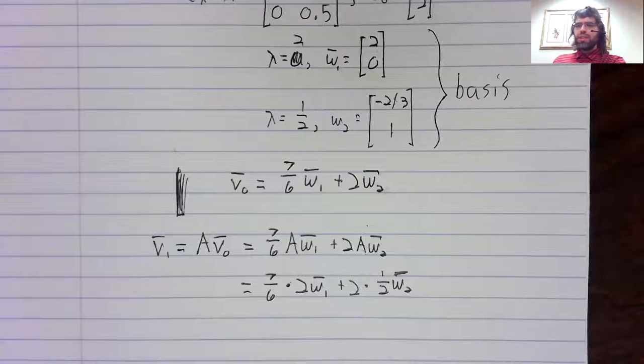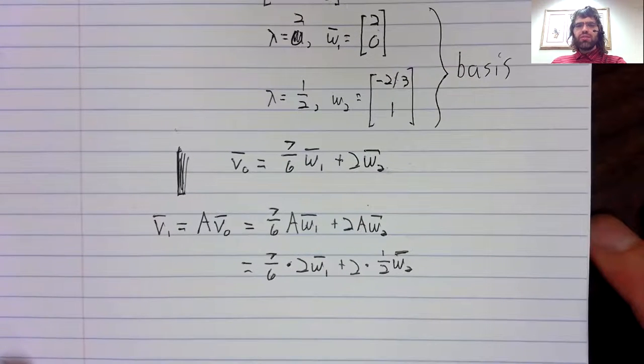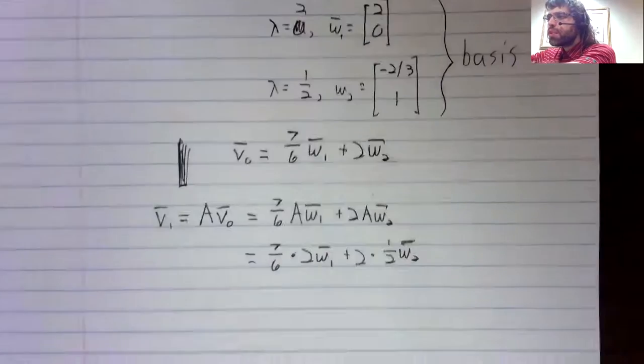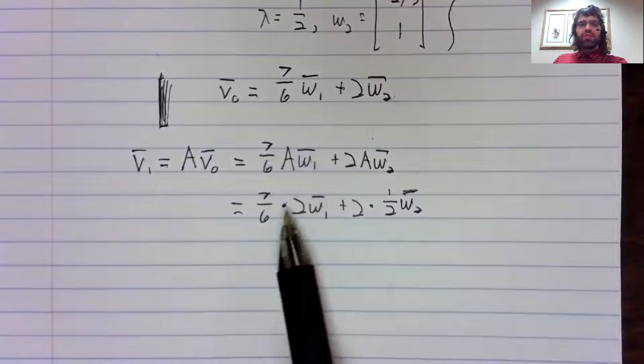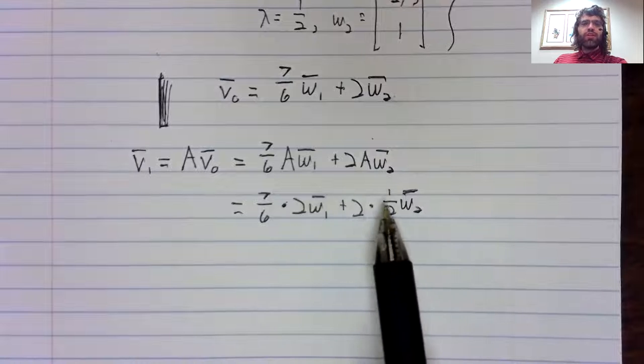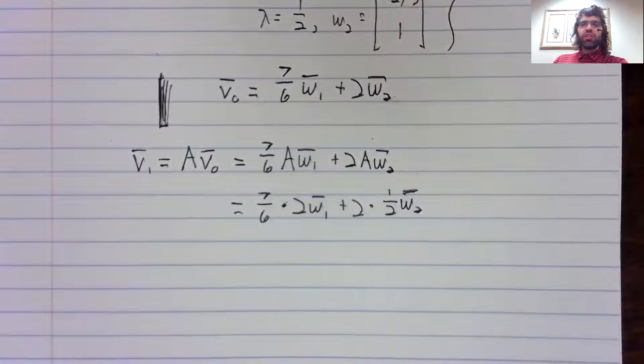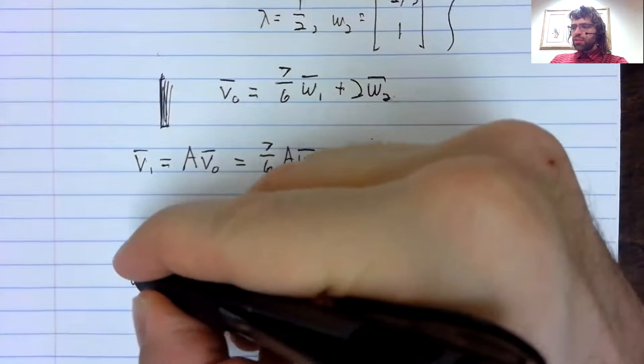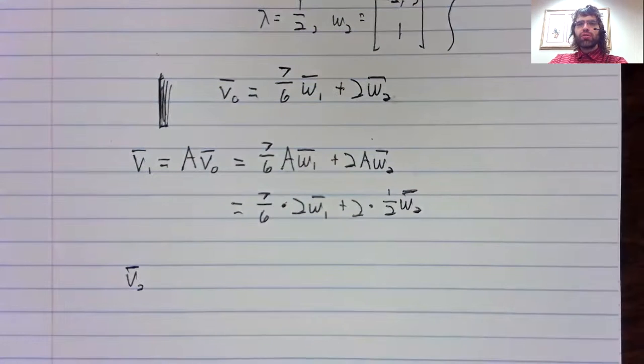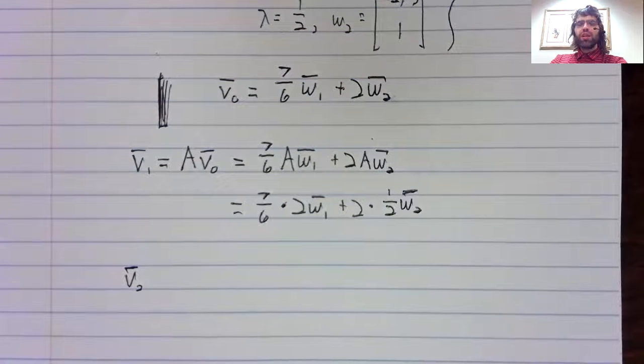So here is V_1, not simplified of course. We could do this scalar multiplication and then do this addition, but instead, let's repeat this argument with V_2.